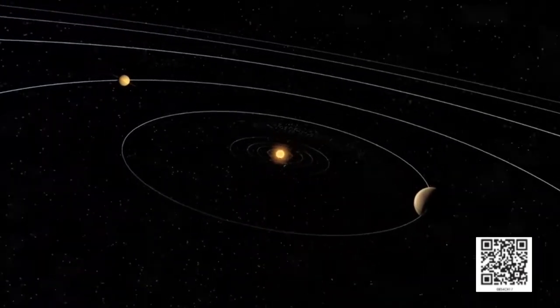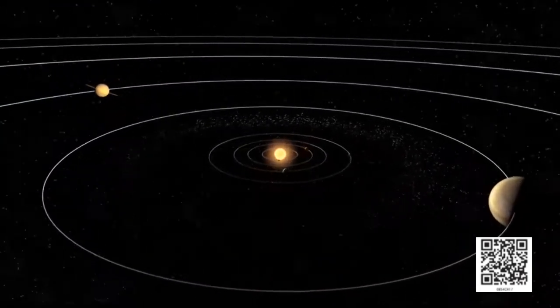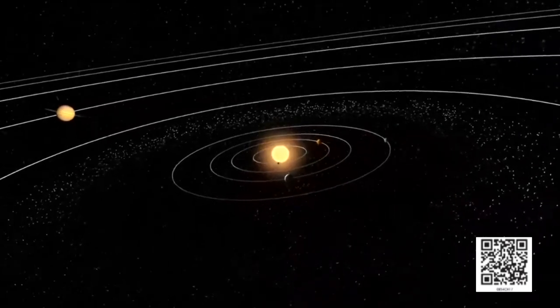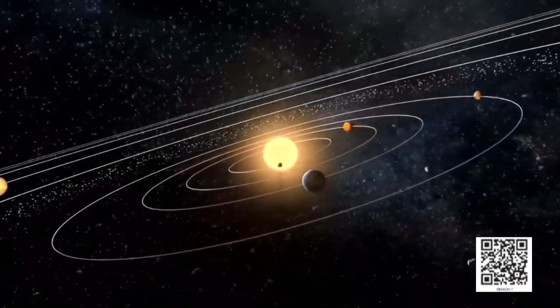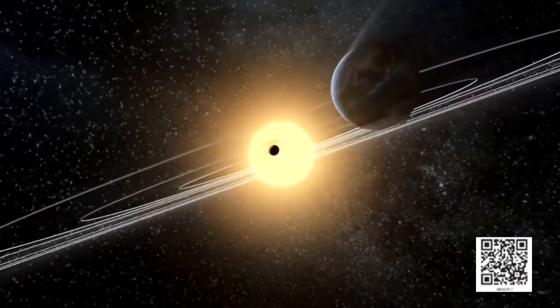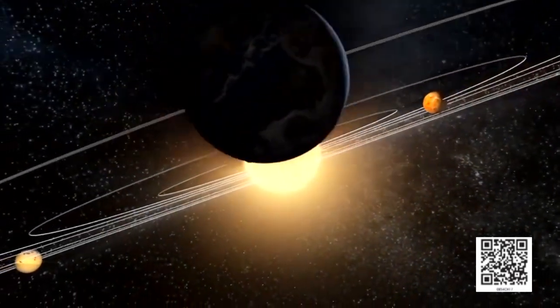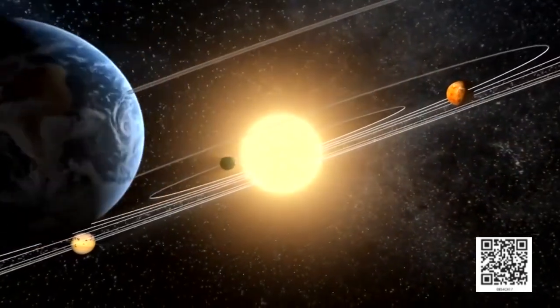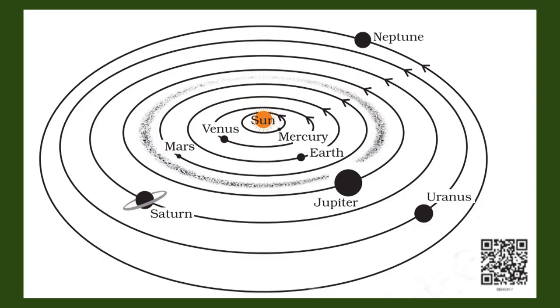The solar system is made up of the sun, various planets, and their satellites. In addition, there are objects in the solar system that cannot be classified as planets or satellites. These are the asteroids, comets, meteors, etc. We will study about them one by one.